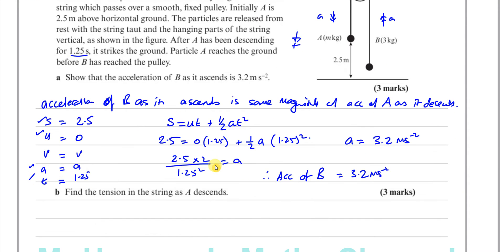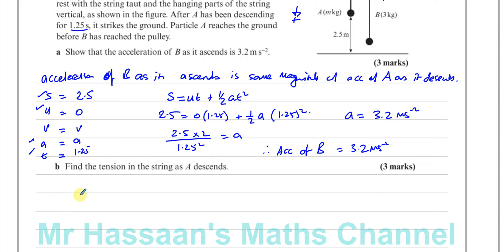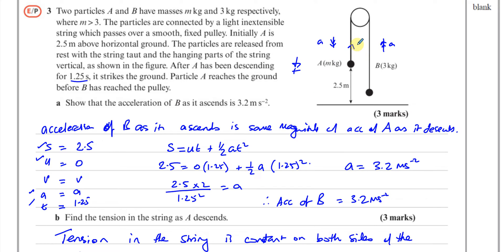Part B asks for the tension in the string as A descends. The tension is the same throughout the whole string because the pulley is smooth — no friction — so the tension is equal on both sides of the pulley. If we consider particle A, we can't find the tension because there are two unknowns: the tension and the mass M. So instead we consider particle B, which has only one unknown — the tension — since we now know the acceleration.